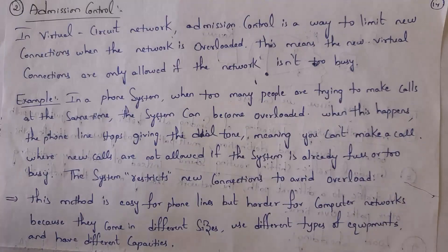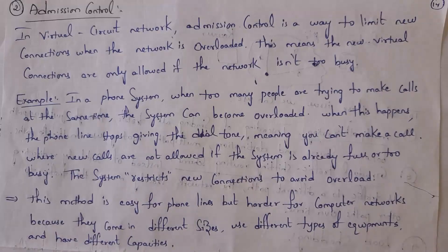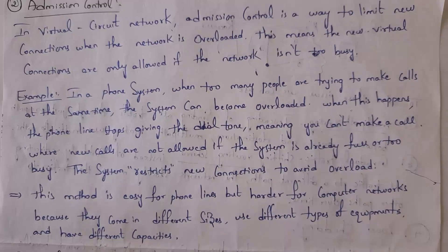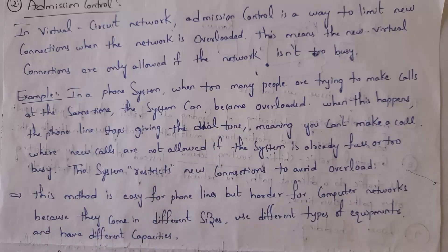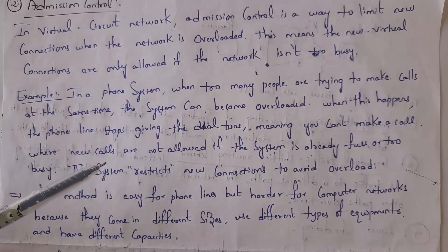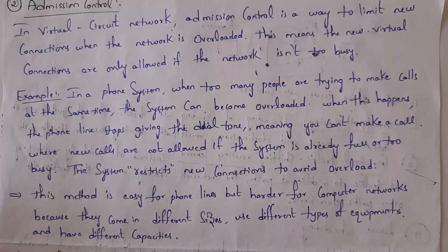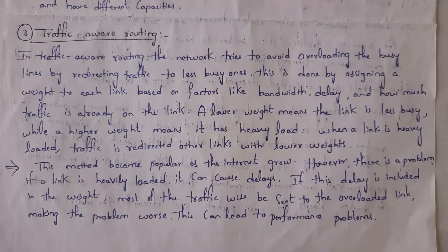The next congestion control approach is admission control. In admission control, new connections are not given to devices whenever the network is overloaded. Only if the network is not busy are new connections given to devices. For example, if you consider a phone system — if too many people try to make a call at the same time, the phone system becomes overloaded, and new calls are not allowed. Only if the phone system is not too busy are new calls allowed. This admission control technique is simple to implement for phone lines but harder to implement for computer networks, because computer networks contain different types of devices with different sizes and capacities.